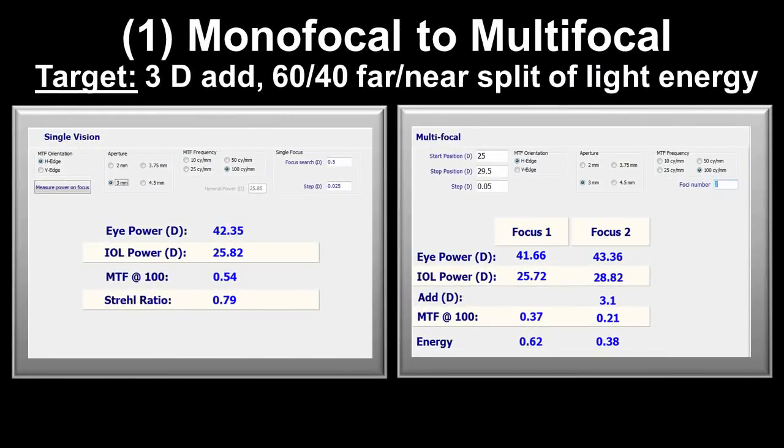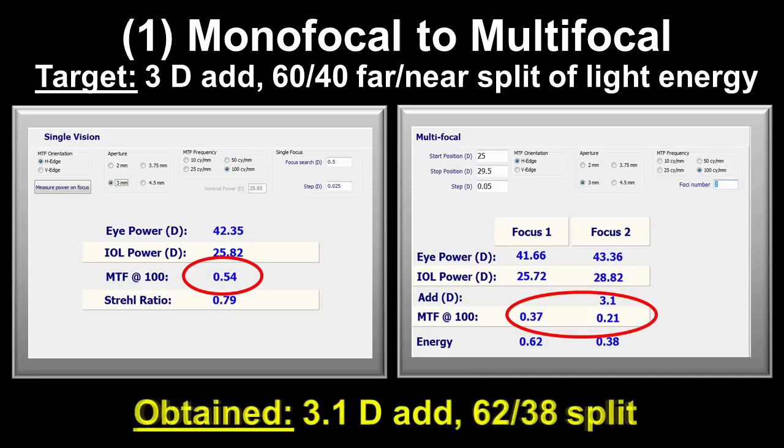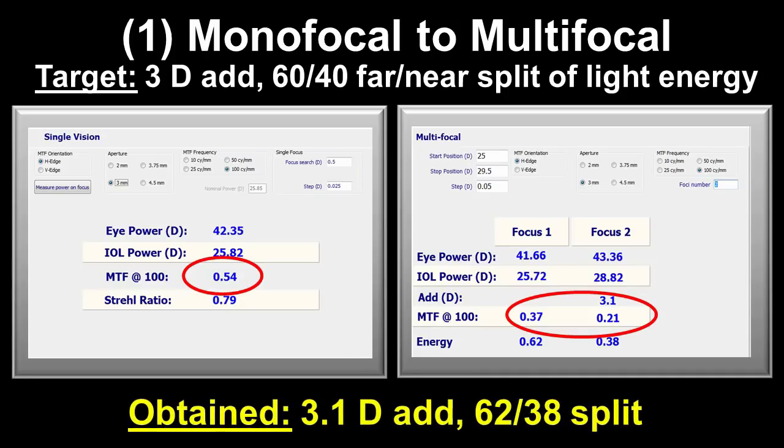A monofocal lens can also be changed into a multifocal lens. The original MTF is split between the far and near foci with values similar to commercially available multifocal lenses. Note the precision of the near addition obtained as well as the light energy split in comparison to the target.